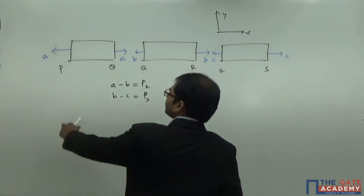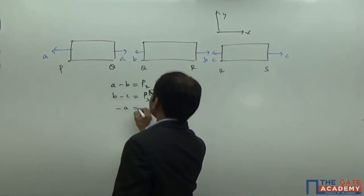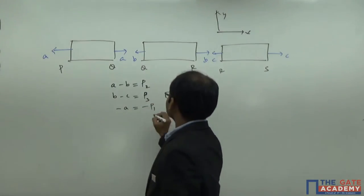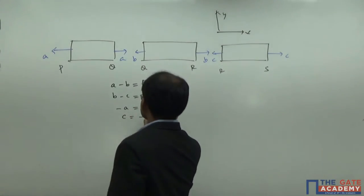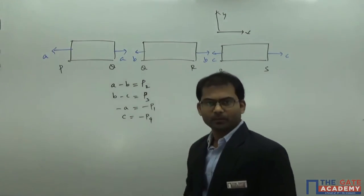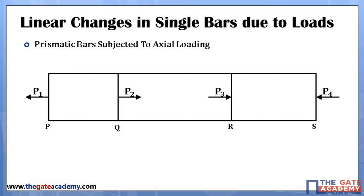For section P, writing the net force in the x-direction equal to zero gives: minus A equals minus P1, so A equals P1. For section S: C equals minus P4. For the whole member, the equilibrium equation gives: minus P1 plus P2 plus P3 minus P4 equals zero. This equation must be satisfied.